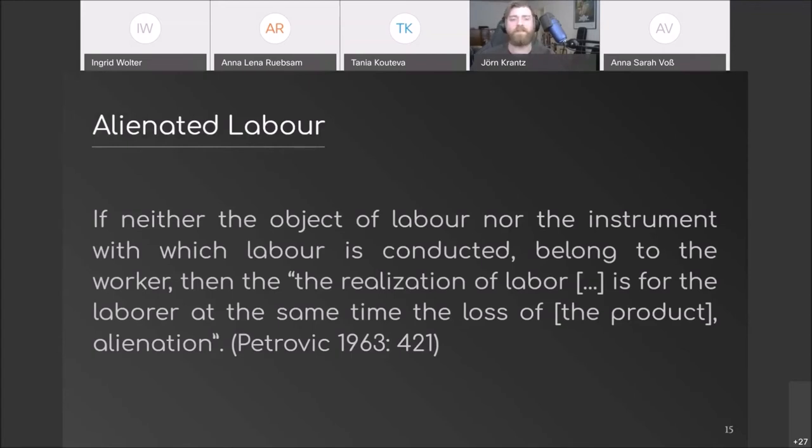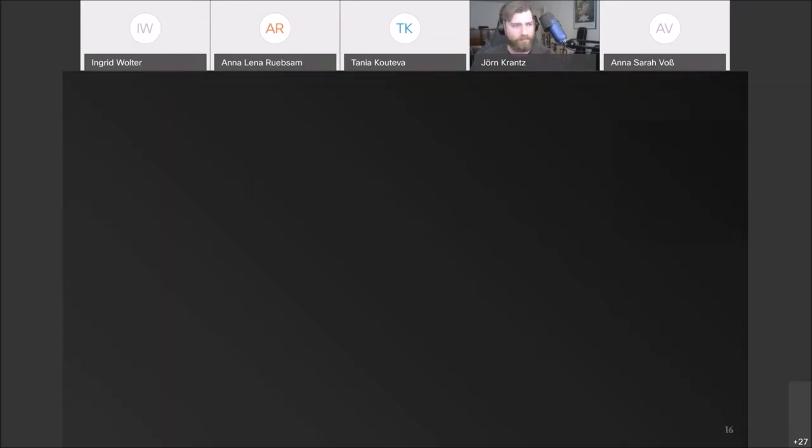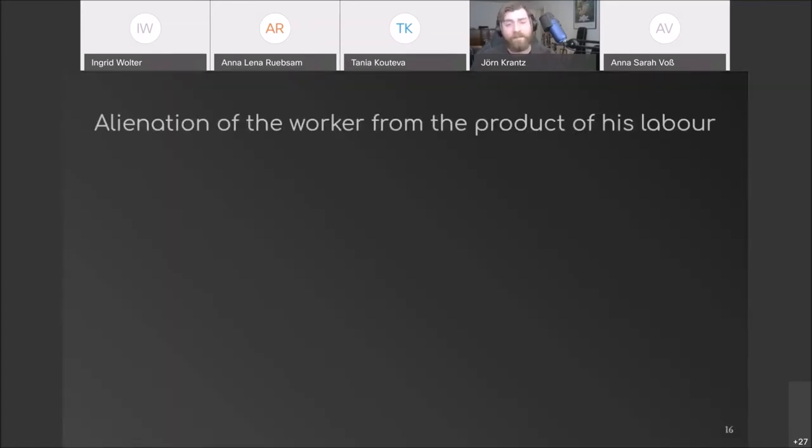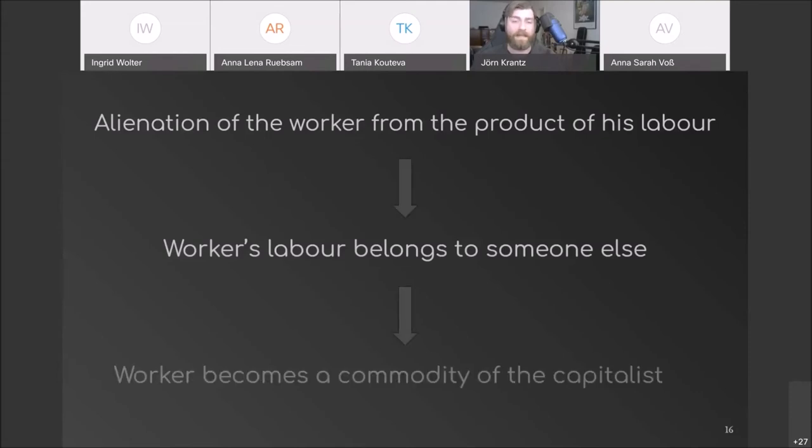So the downward steps to the worker's estrangement are the following. The worker is alienated from the labor's product by the owner of labor, object and instrument. The worker is alienated from the labor, from the activity of labor itself. And lastly, the worker is alienated from man as he himself becomes a commodity of the capitalist.